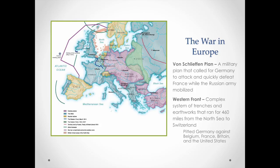The Von Schlieffen Plan was a military plan that called for Germans to attack quickly and defeat France while the Russian army was mobilizing. They were going to come through the low countries — Belgium, Holland, the Netherlands — and into France. This develops the so-called Western Front, which was a system of trenches that ran between the North Sea all the way down to Switzerland. In the map, you see the Western Front highlighted in dark blue just north of Paris and west of Brussels. This pitted Germany against Belgium, France, Great Britain, and the United States.